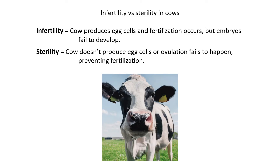Now we need to talk about infertility versus sterility specifically in cows. Infertility means the cow does produce egg cells and fertilization does occur — she is mated, the sperm cell is present and fertilization happens — but for some reason the embryo fails to develop. She may abort the embryo or it may simply not develop into a calf. Sterility means the cow does not produce any egg cells, or ovulation does not occur, preventing fertilization entirely even if she is mated.